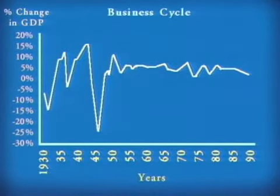The business cycle is comprised of four parts: the boom, peak, recession, and trough — referring to the rise, the top, the fall, and the bottom of the cycle. Economists try to predict the business cycle by examining certain indicators. Leading indicators, such as consumer confidence, indicate a future change in the business cycle. Coincident indicators, such as retail sales, occur simultaneously. And lagging indicators, such as unemployment, follow the changes in the business cycle.